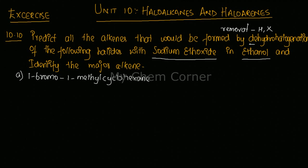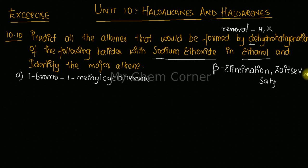We need to identify which is the major alkene produced. Whenever we learn dehydrohalogenation, we come across beta elimination, also known as Zaitsev's rule — spelled either way depending on the textbook. We are going to follow this rule throughout the entire question. Let's draw the structure first.